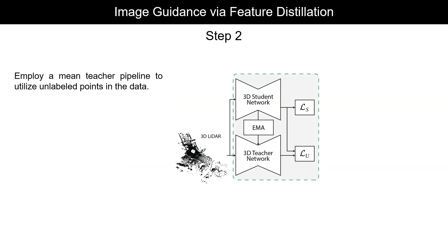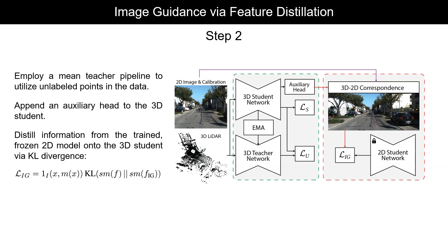In the second step, as a baseline 3D network, we employ a mean teacher pipeline to also utilize the unlabeled points within our data. We establish point-to-pixel correspondence between the LiDAR point cloud and the camera image, and with an auxiliary head appended onto the 3D student, distill the information from the generated features onto the 3D network via an auxiliary KL divergence loss. With this auxiliary loss, the 3D network aims to mimic the more mature representation of the 2D network from step 1, for all points that have pixel correspondences.